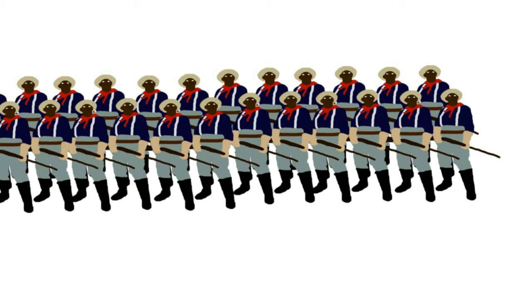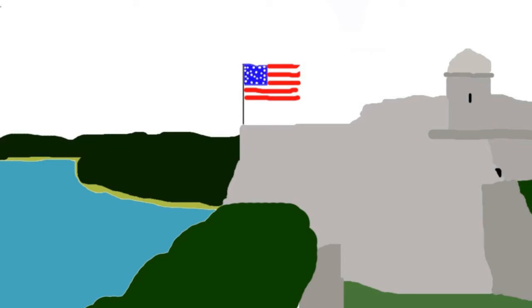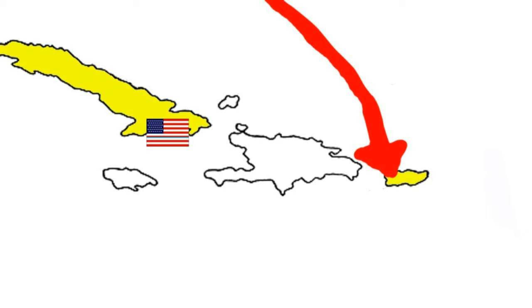The Spanish were able to put up some resistance, however the American forces, which included Buffalo Soldiers and the Rough Riders, were able to defeat them at the Battle of San Juan Hill and El Caney in early July. The former battle was where Teddy Roosevelt earned his fame. Santiago eventually fell and the Americans continued to occupy the city for the rest of the war.